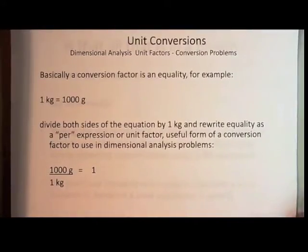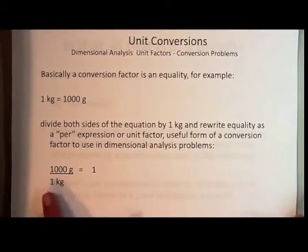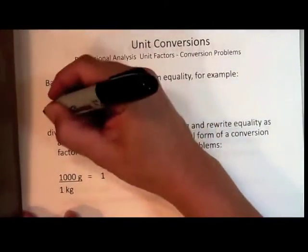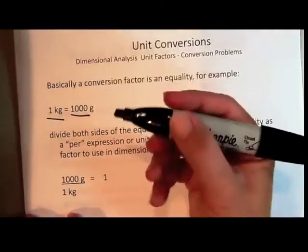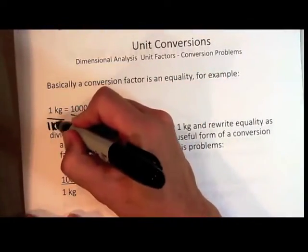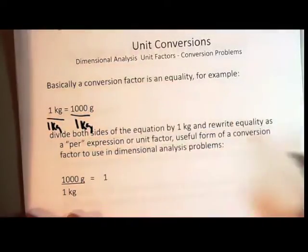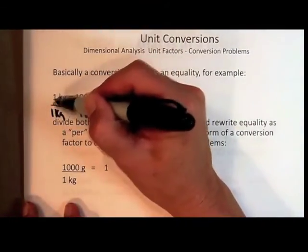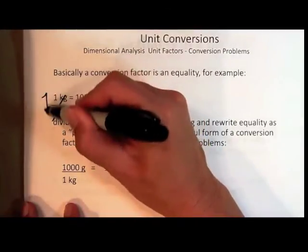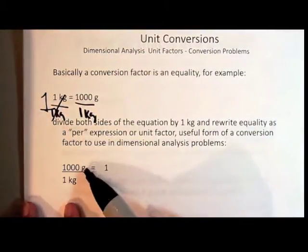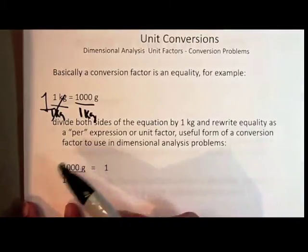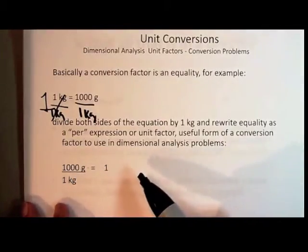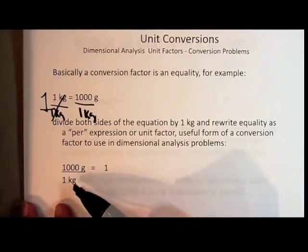In this case, for example, what we have done to get this relationship is divide both sides of this equality by one kilogram. If you divide both sides of that equality by one kilogram, this one kilogram divided by one kilogram is the same as one. So 1,000 grams divided by one kilogram equals one. This is called a unit factor because you can multiply this by a unit that's in kilograms - the kilogram unit would cancel and you would be left with the gram unit.